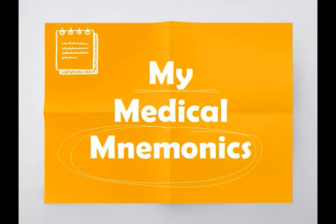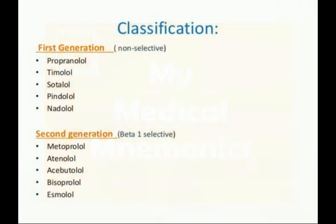Welcome to the channel 'My Medical Mnemonics'. We are going to see a mnemonic to remember cardio selective beta blockers. Beta blockers are drugs which can be non-selective, acting on both beta-1 and beta-2 receptors, while cardio selective beta blockers only act on the beta-1 receptor.